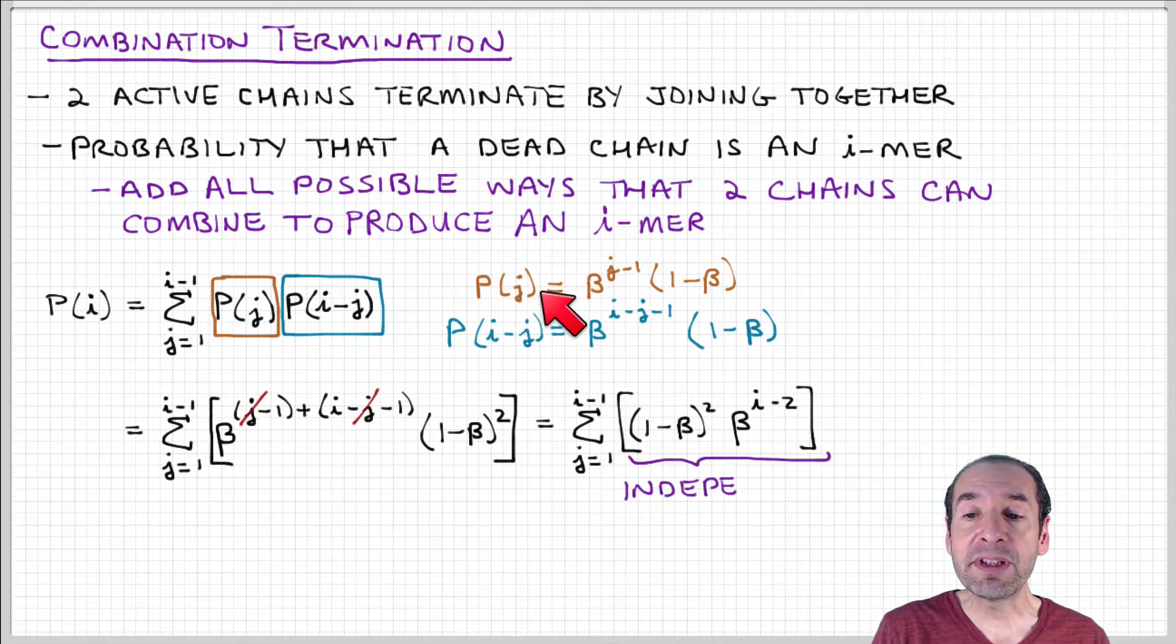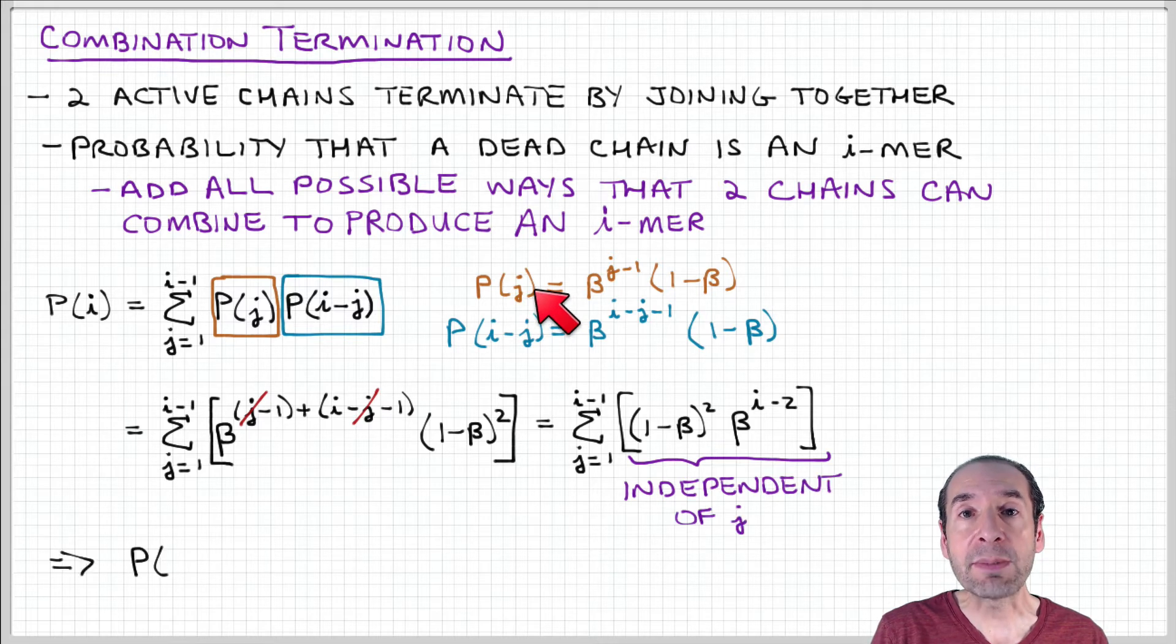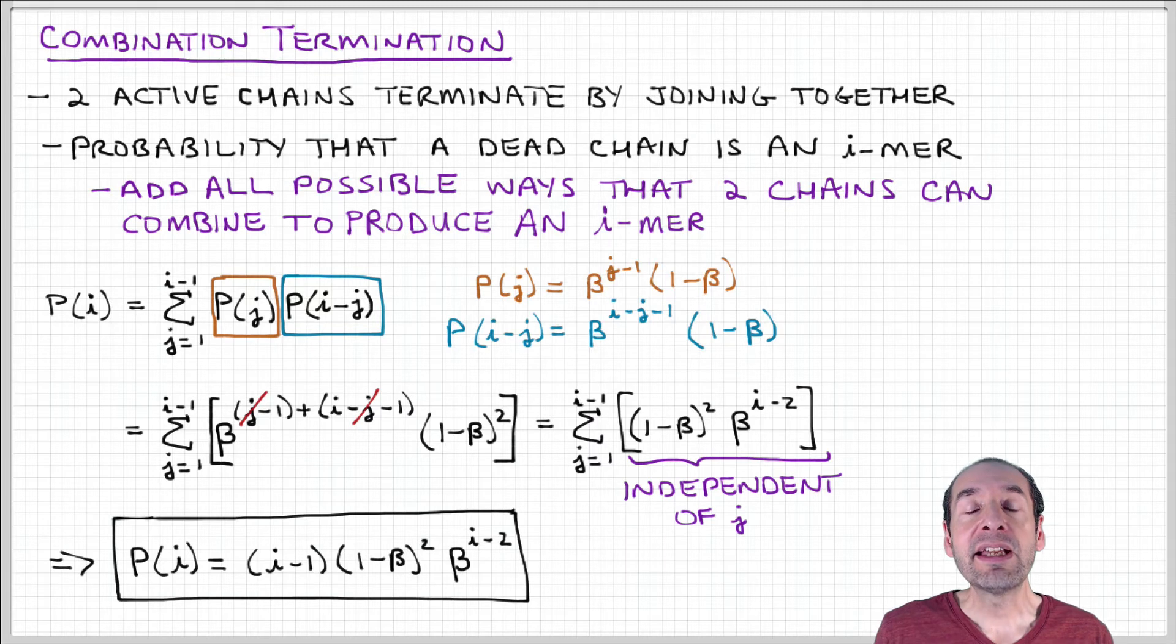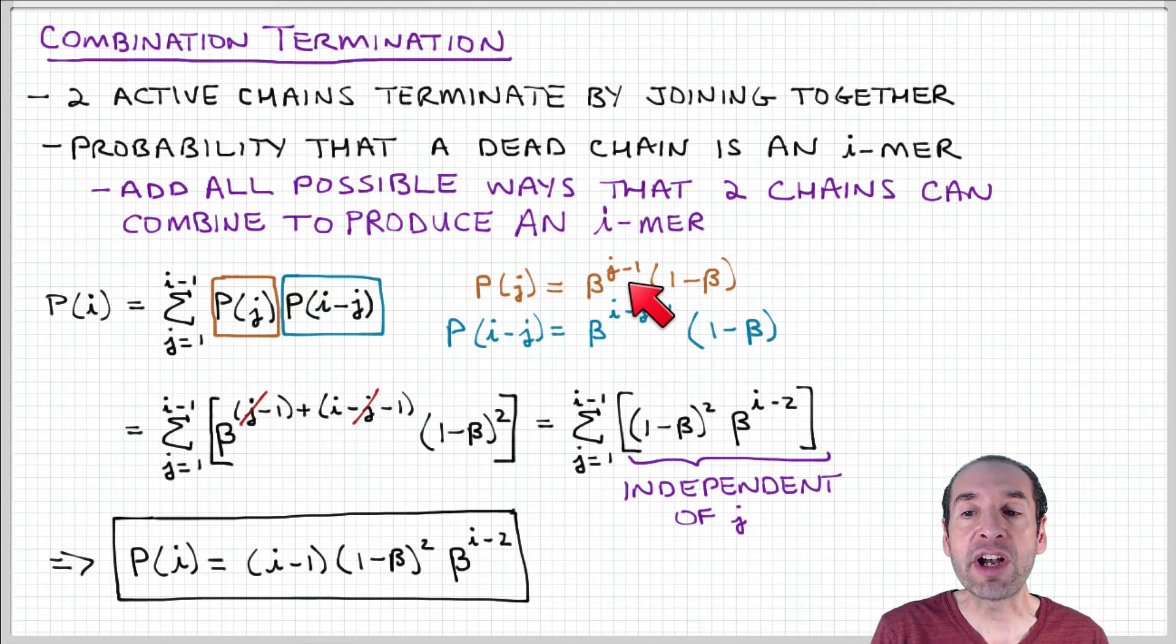So this first term, the probability that a chain is a j-mer, remember that this is similar to what we already obtained in our analysis of disproportionation termination. So we have beta to the j minus 1, which is the probability that the chain is propagated to a length j minus 1.